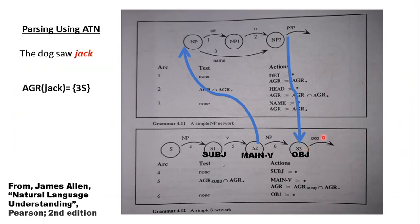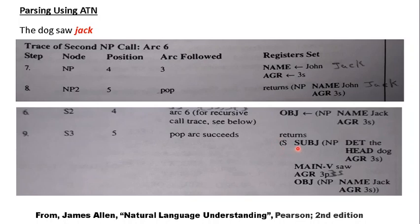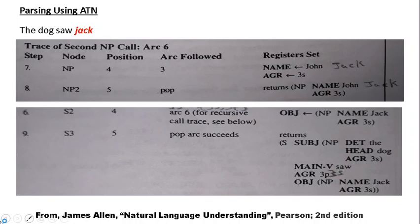At S3, we follow the final pop arc of the main ATN. When popping from an ATN, we return the network name 'S' along with all accumulated features: subj (containing det='the', head='dog', agr=3S), main_v='saw', and obj (containing name='Jack', agr=3S). The number agreement constraint (3S) has been enforced throughout via test conditions at each arc. This completes the parse of 'The dog saw Jack' using the augmented transition network.